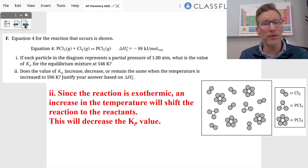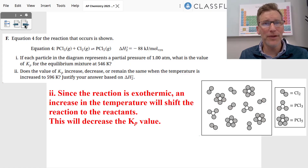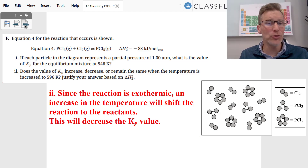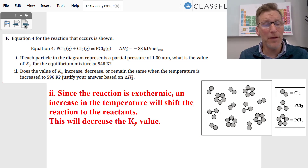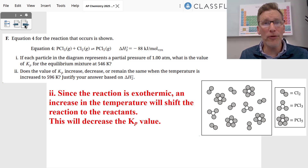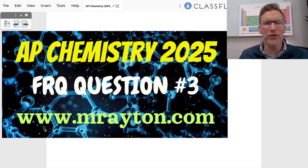The second part asks what happens to Kp if we increase the temperature. Since this is an exothermic reaction, increasing the temperature shifts the equilibrium to the left toward the reactants. This makes the denominator of the K expression larger, so Kp overall will decrease. That concludes question number three — check out my other videos at mradian.com!